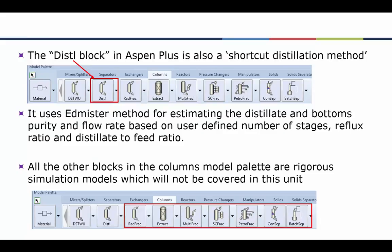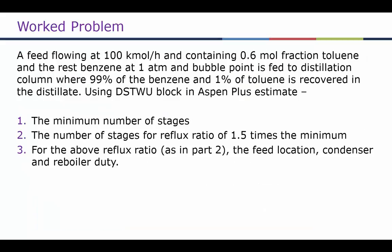The DISTL block in Aspen is also a shortcut distillation method. It uses the Edmister method for estimating distillate and bottoms purity and flow rate based on user-defined number of stages, reflux ratio, and distillate-to-feed ratio. There are other more rigorous blocks available that we won't cover in great detail in this unit, but you are free to explore those on your own. Let's now look at a worked problem using the DSTWU block.